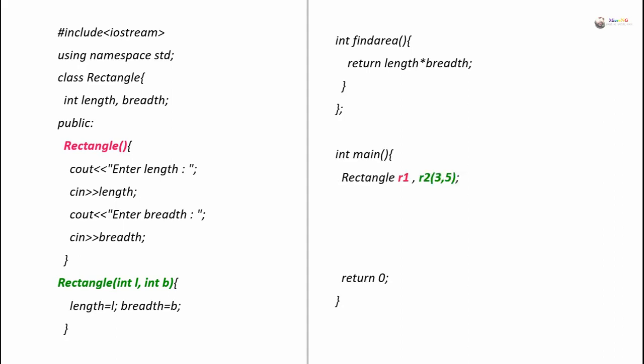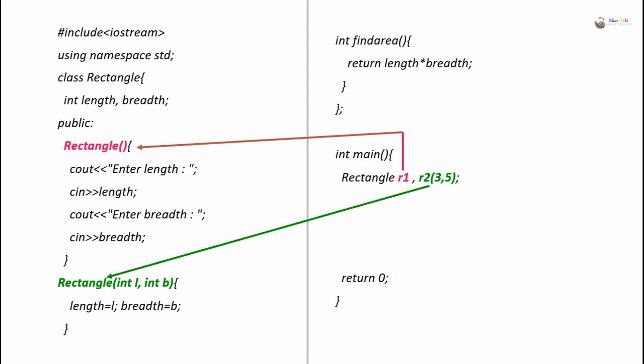In the main method we have created two objects for the Rectangle class, named R1 and R2. During the creation of R1, no parameter values are mentioned, so the default constructor is called, and inside the default constructor it takes the values of length and breadth for R1 from the user. While creating R2, the parameter values 3 and 5 are passed, so the parameterized constructor is called. The value 3 is passed to L and 5 to B; from L the value 3 goes to length and from B the value 5 goes to breadth, so length and breadth for R2 are initialized as 3 and 5.